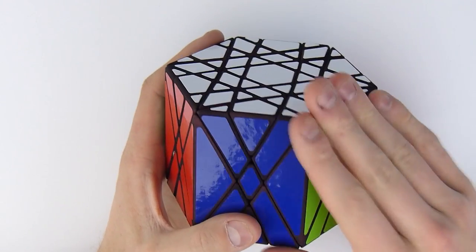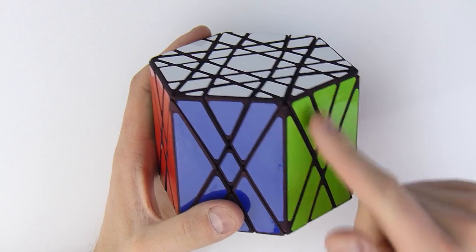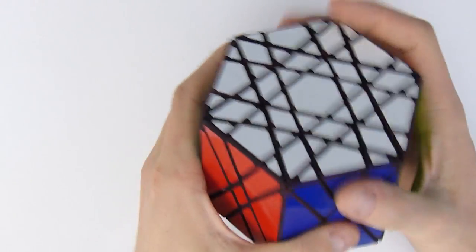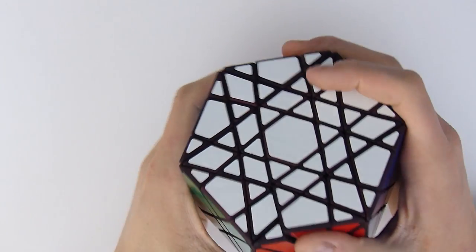So the thing is this has four layers of mechanism, there are four different puzzles superposed inside which is why it's so heavy and so big. It's about 500 grams.